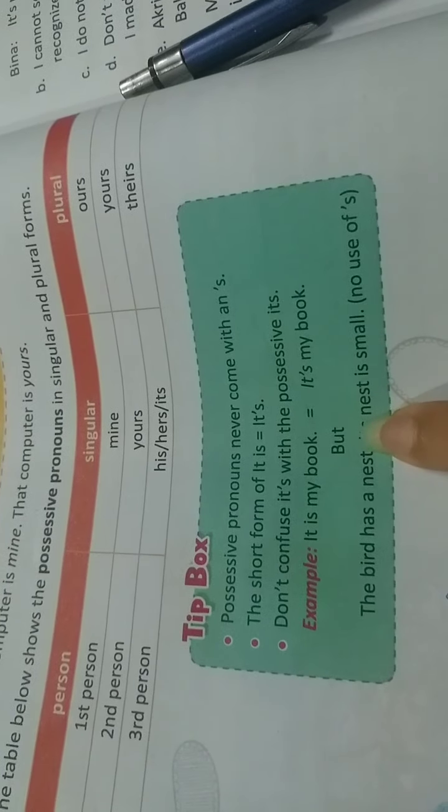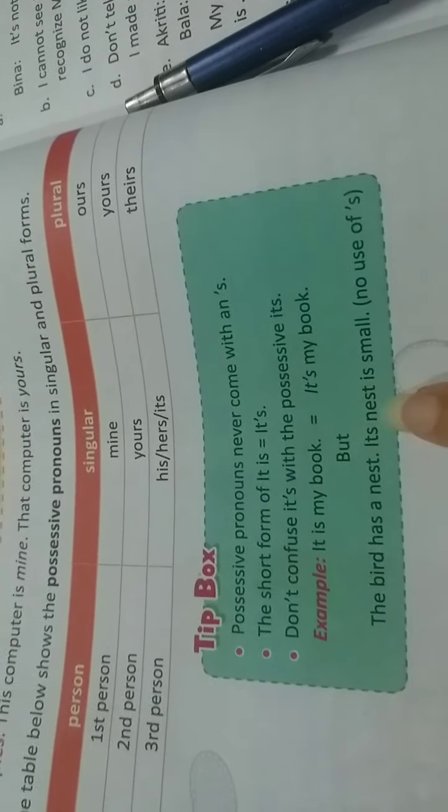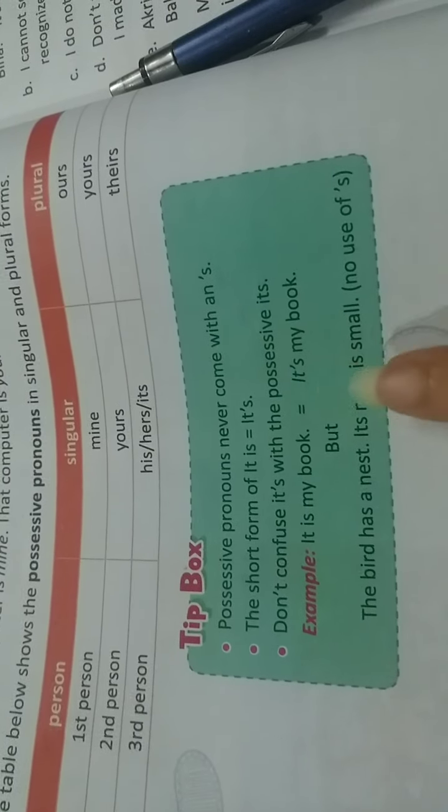Now, the bird has a nest. Its nest is small. Now, the nest belongs to whom? To the bird. So, here we need to show the possessive case.